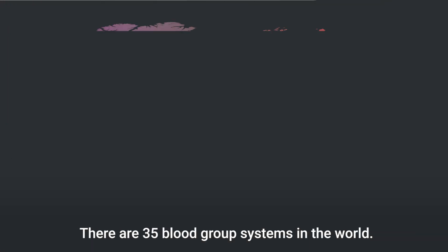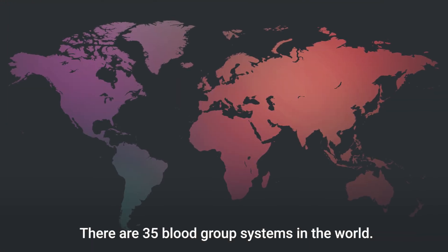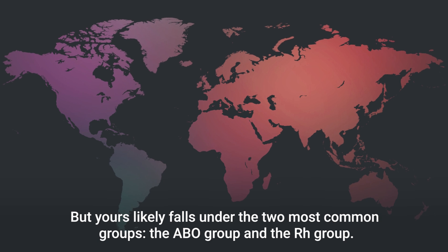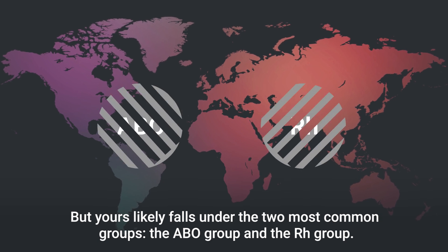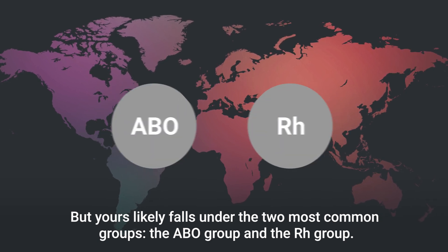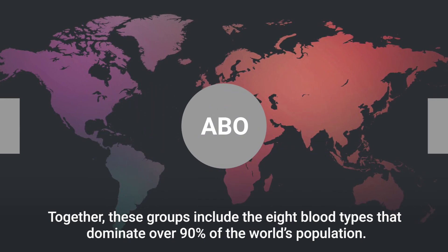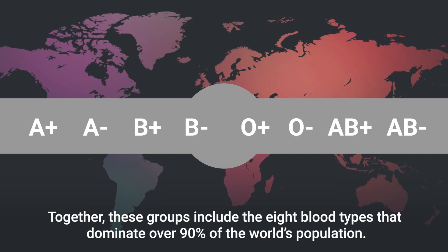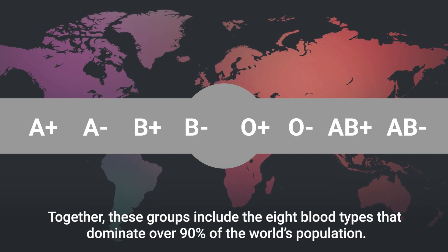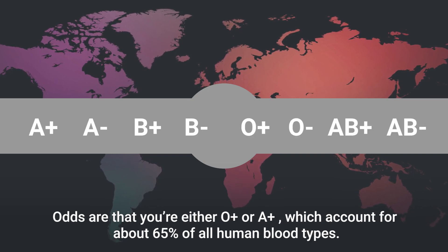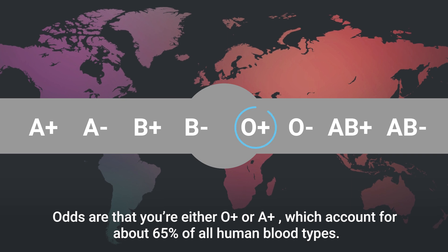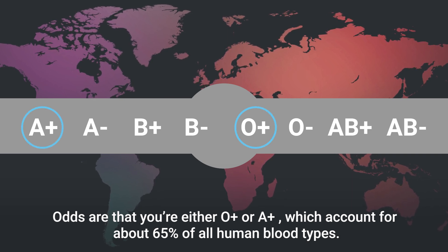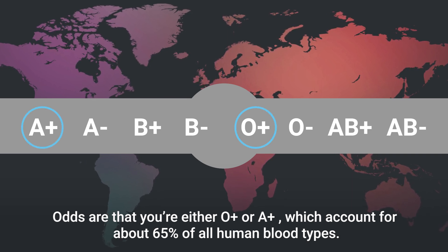There are 35 blood group systems in the world, but yours likely falls under the two most common groups: the ABO group and the RH group. Together, these groups include the eight blood types that dominate over 90% of the world's population. Odds are that you're either O positive or A positive, which account for about 65% of all human blood types.